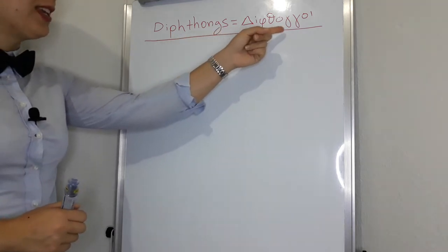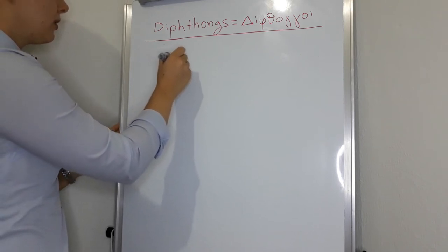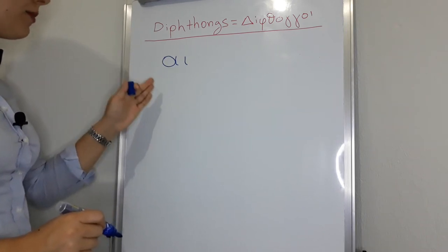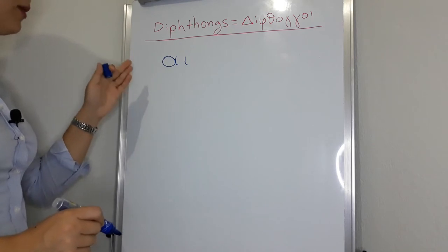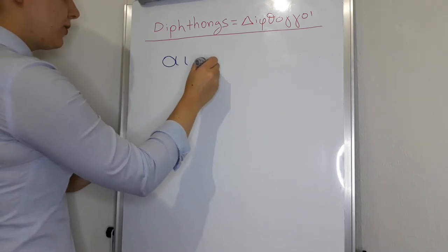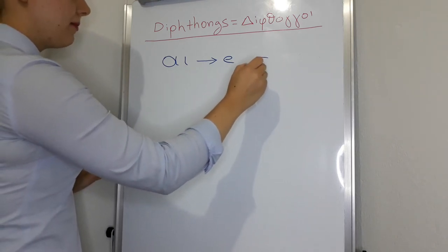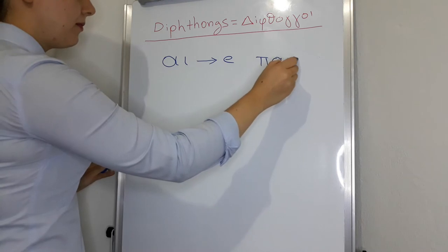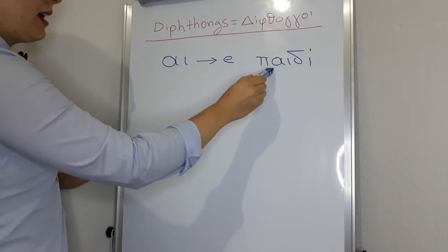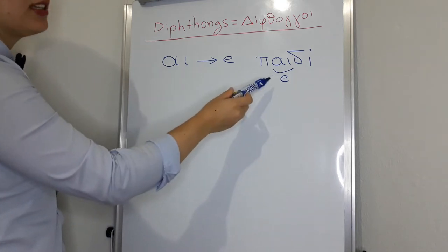In Greek, diphthongi. The first one is alfa yota. The name of this is alfa yota. Remember the letters of Greek alphabet, alfa and yota. The pronunciation of this diphthong is e. Look at the Greek word pedi. Child or kid in English.